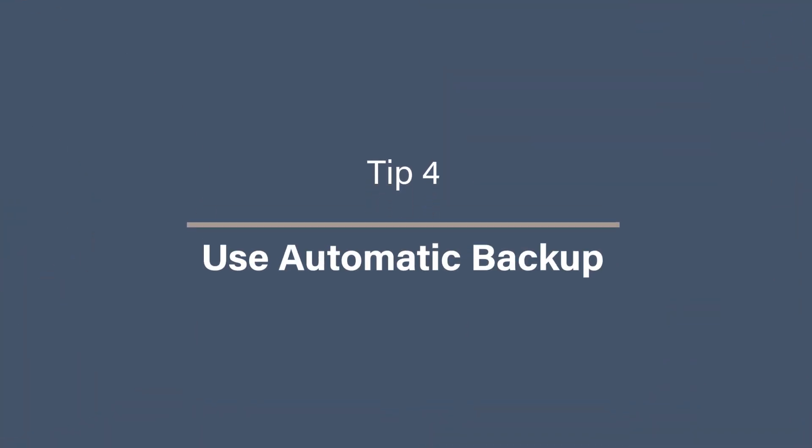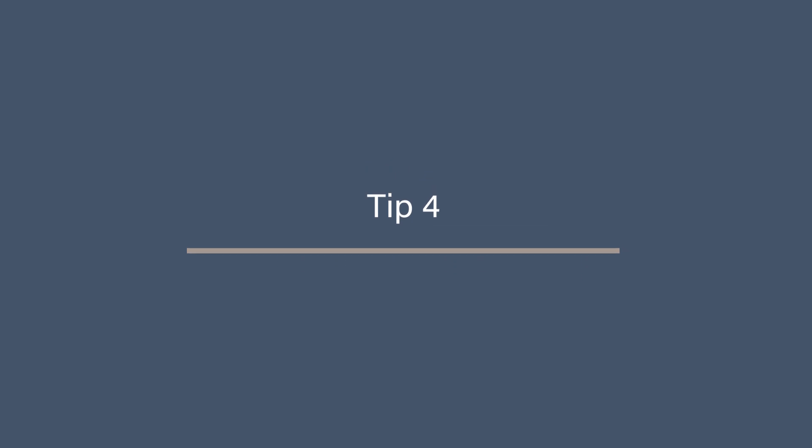Tip 4: Use automatic backup. No one likes manually backing up files — and let's be honest, if you have to do it manually, the likelihood of it happening regularly is not that likely. Thankfully, most photo management apps have automatic backup features that make it simple. Whether you're using Google Photos, Apple Photos, OneDrive, or Dropbox, all of these services offer automatic syncing features that run in the background. With Google Photos, OneDrive, and Dropbox, you can enable automatic uploads in the app settings, which means all new photos will be automatically backed up to the cloud.